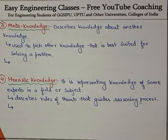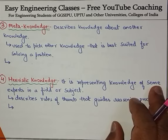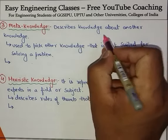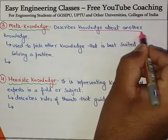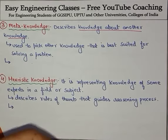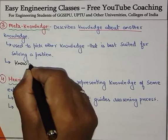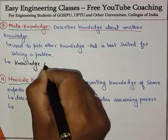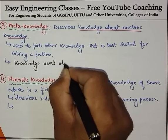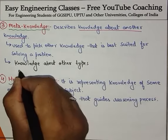The third type of knowledge is meta knowledge. As the name suggests, just like metadata is data about data, meta knowledge is knowledge about another knowledge. It is the knowledge about other types of knowledge.